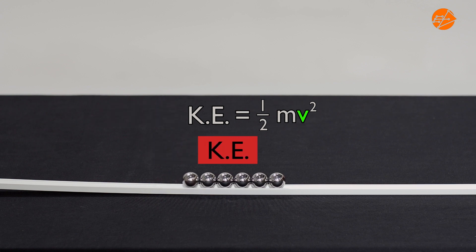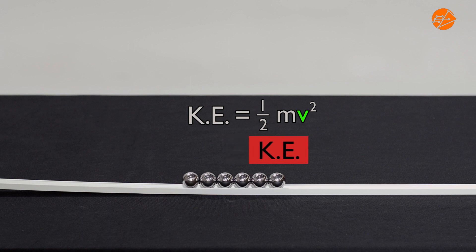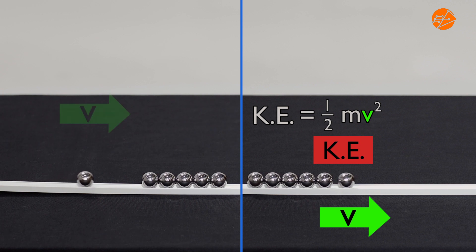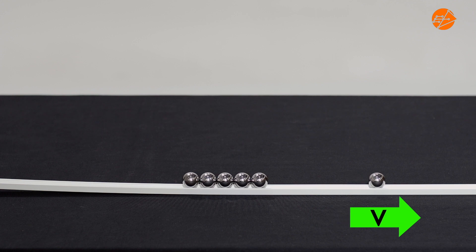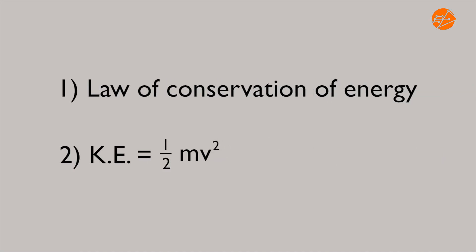Energy is transferred from the rolling ball bearing through the five ball bearings. The last ball bearing then receives all the energy. Since no energy is lost or added and all ball bearings are identical, it has the same amount of kinetic energy, KE, and hence leaves the group with velocity V. This velocity is the same as the velocity when the rolling ball bearing reaches the horizontal section of the track, so the ball bearings roll at the same velocity before and after the collision. This transfer of energy demonstrates these concepts.